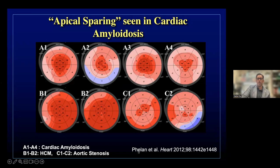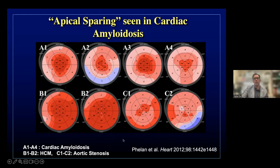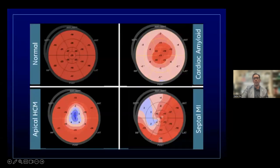A case series from Dermot Phelan at Cleveland Clinic showed four cardiac amyloidosis patients (A1 to A4) all demonstrating the apical sparing pattern. There are some technical factors like foreshortening that can contribute to apparent apical sparing, but this pattern — with the apex relatively preserved — is very different from other causes of LVH. In hypertrophic cardiomyopathy (B1-B2), the area of hypertrophy has the lowest strain. In aortic stenosis (C1-C2), there's a more homogeneous pattern of decreased strain across all segments. In apical HCM, strain is actually reduced at the apex — the opposite of cardiac amyloidosis.